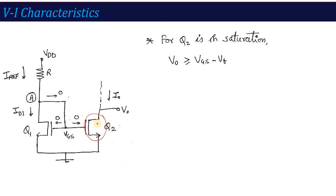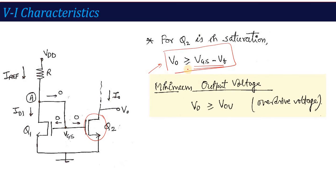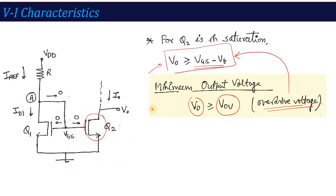Q2 will be in saturation when V0 is greater than VGS − VT. So this is the minimum voltage — the minimum output voltage must be VGS − VT — for the transistor to be in saturation and the current to be maintained. This voltage is called the minimum output voltage or minimum sustainable voltage. It is also defined as V0 ≥ VOV, where VOV is called the overdrive voltage, which equals VGS − VT. If you are asked what is the minimum sustainable voltage with respect to the current mirror, you can define it using this formula.